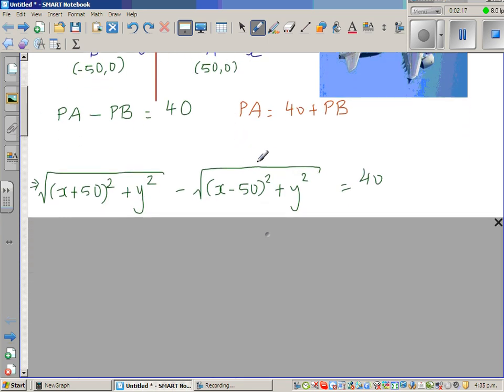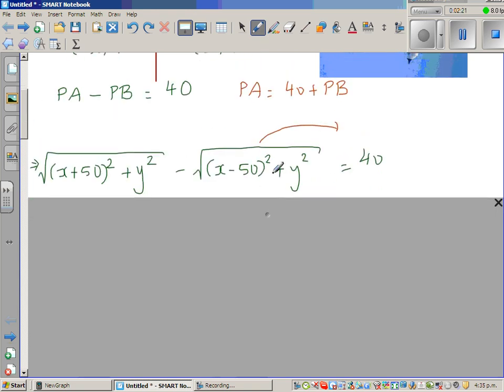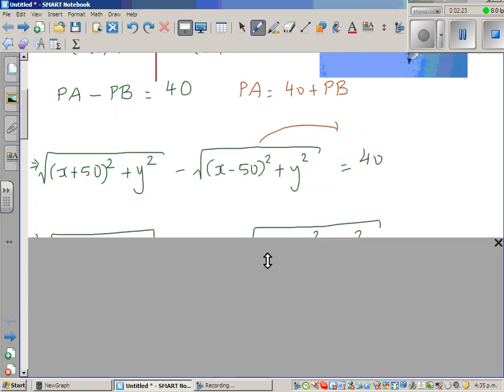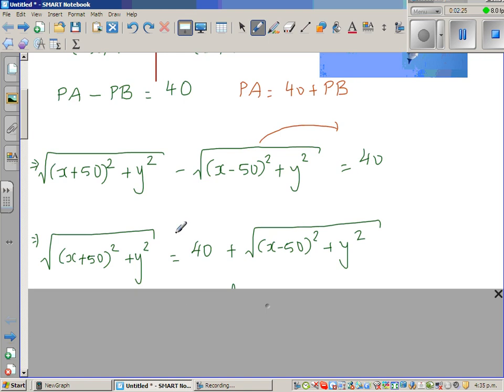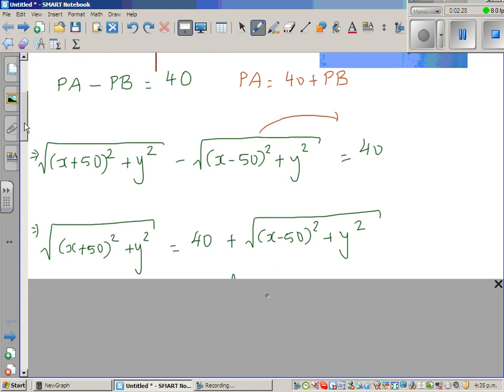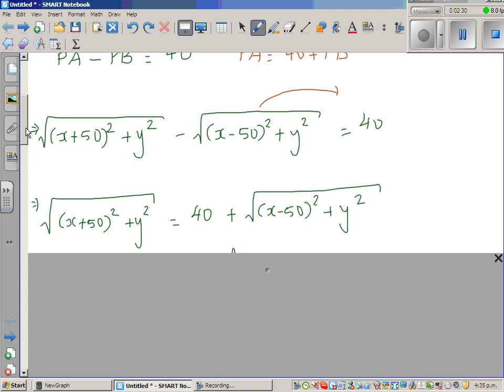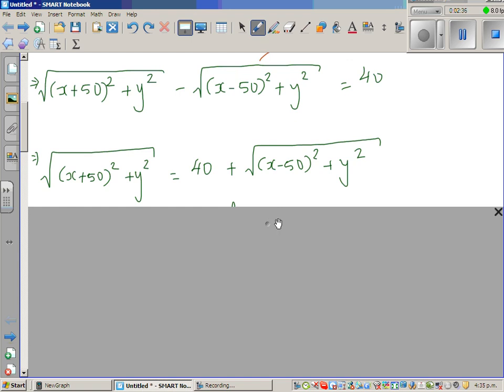The next step, I'm going to move this to the right hand side, or you're adding this to both sides, whichever way you understand. I hope you understand, so this has gone to the other side. What should we do next? I want to get rid of this radical or square root. So the only thing that you can do is squaring both sides.